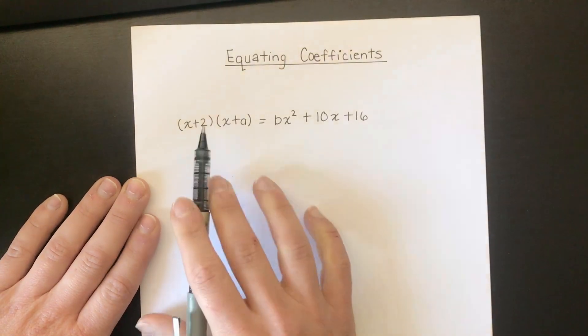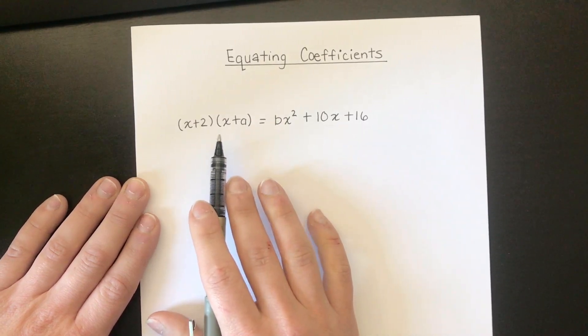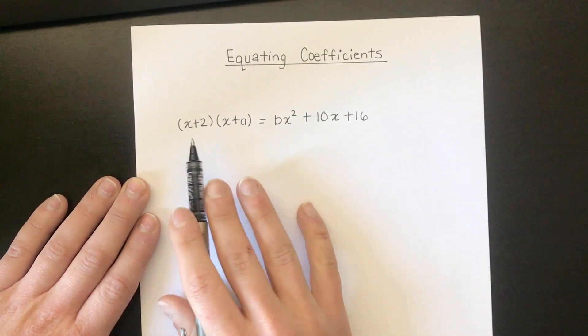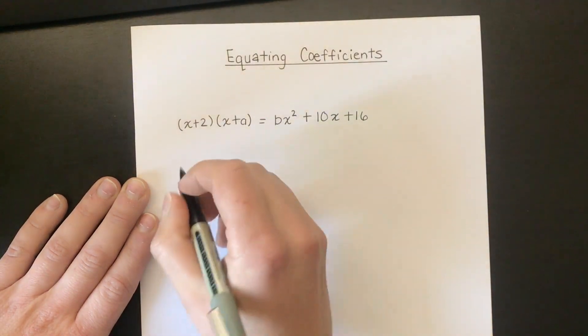So the first thing we're going to do is we're going to expand out these two brackets here doing like we did all the time. We're going to do the x times by the x and the x times by the a and the 2 times by the x and the 2 times by a. So let's try that out.